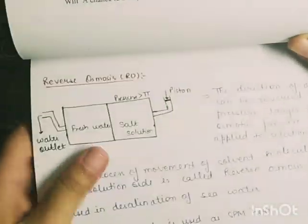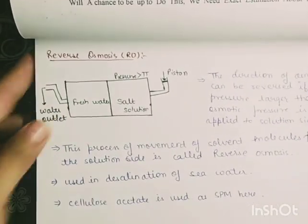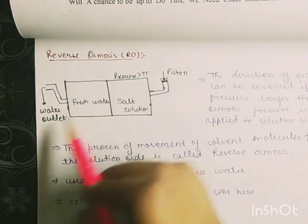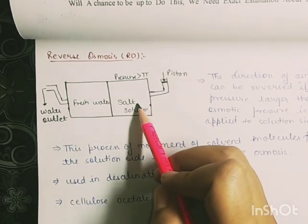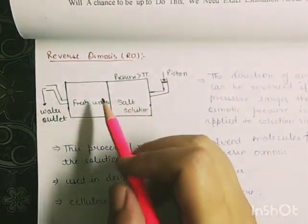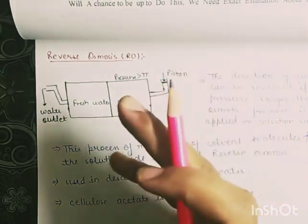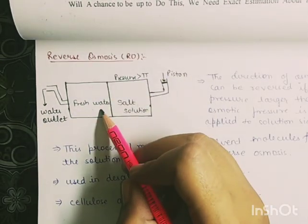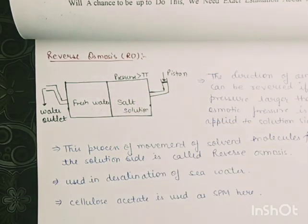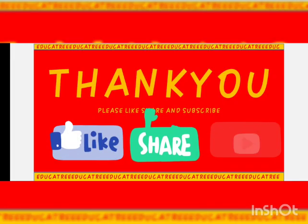Finally, reverse osmosis (RO) — the process on which your home RO water purifier is based. In reverse osmosis, the process is reversed: if we have fresh water on one side and a salt solution on the other, and we apply pressure greater than the osmotic pressure on the salt solution side, fresh water is pushed through the membrane.